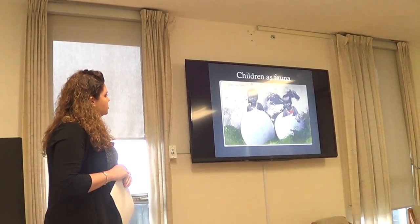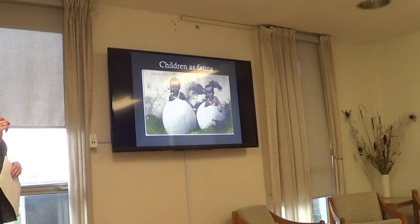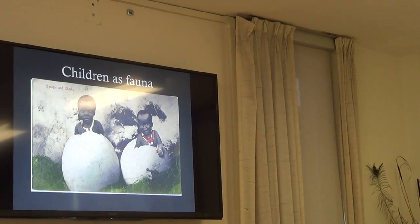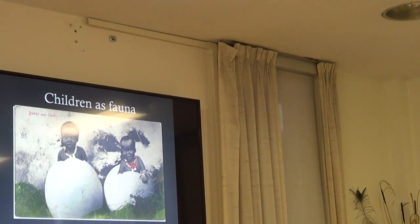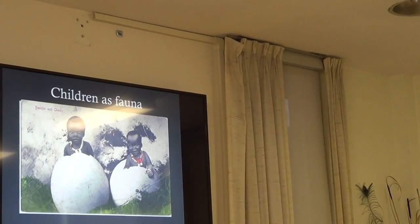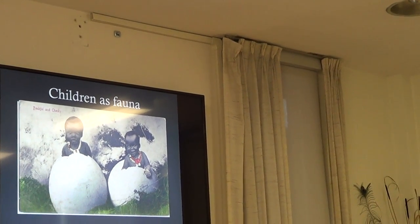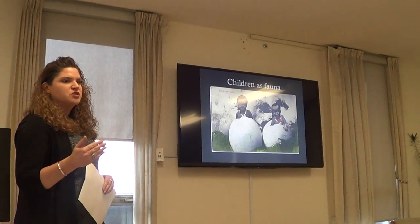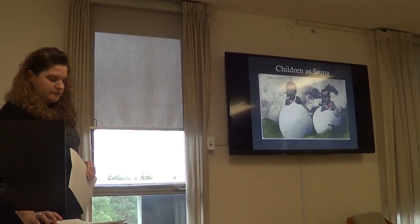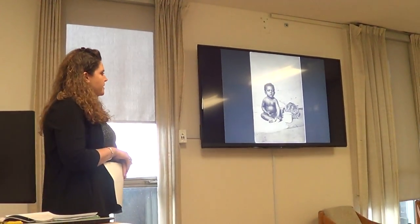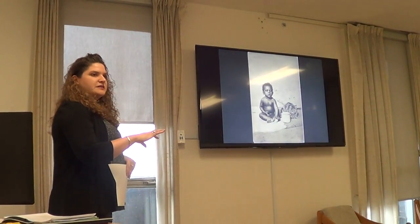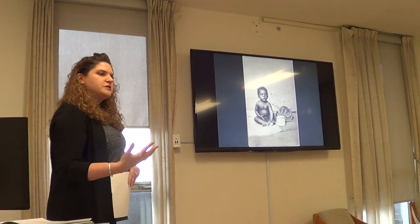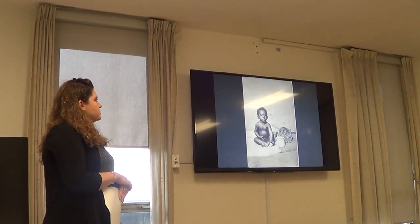One of the other common tropes is children as fauna, which is especially common with children specifically. Here we see a manipulated image of two Zulu children placed into what might be a set of dinosaur eggs, captioned 'Bashful and Cheeky.' This closeness and inseparable connection between Africans and their natural environment appears in many images placing African children in close proximity to a range of animals — pigs, antelopes — and also a range of images which refer to children as animals.